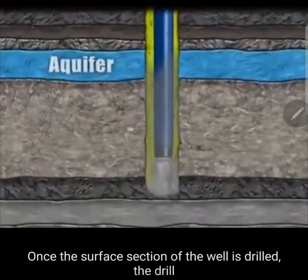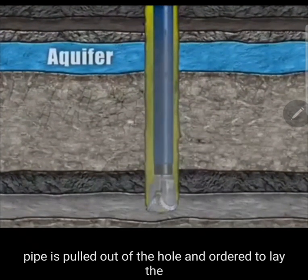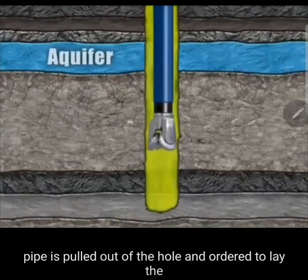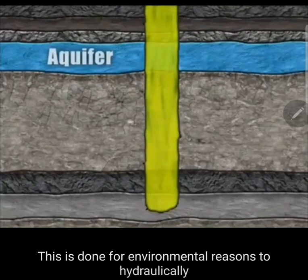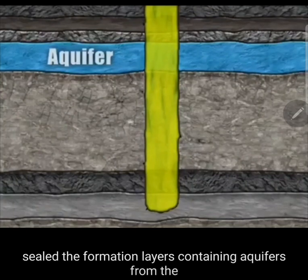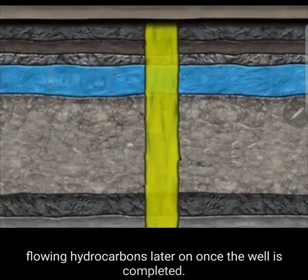Once the surface section of the well is drilled, the drill pipe is pulled out of the hole in order to lay the casing. This is done for environmental reasons to hydraulically seal the formation layers containing aquifers from the flowing hydrocarbons later on, once the well is completed.